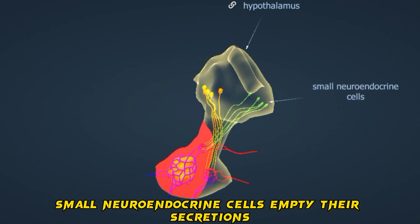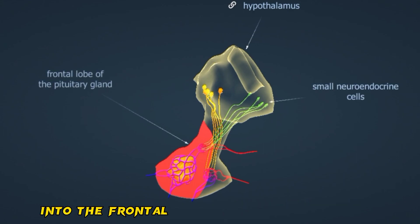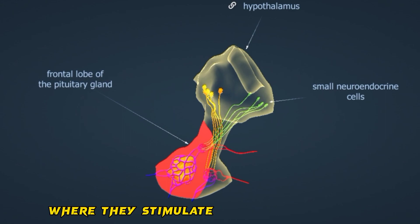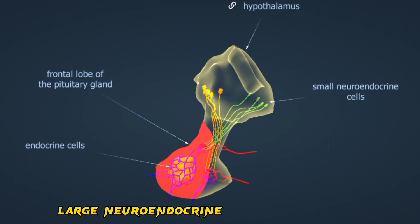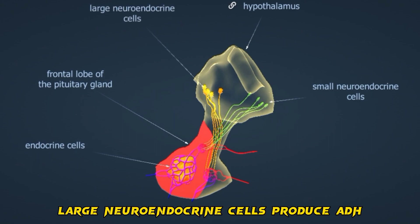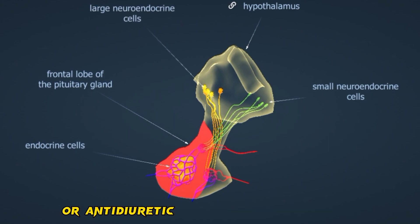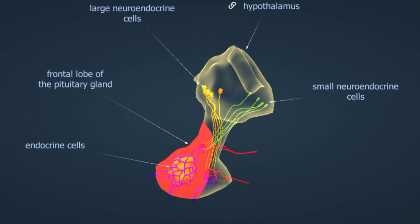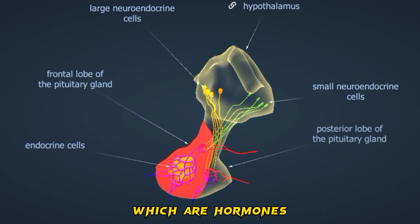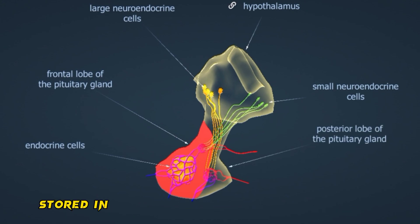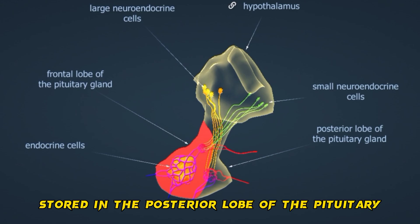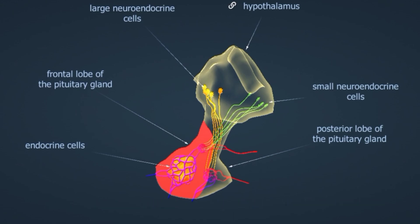Small neuroendocrine cells empty their secretions into the frontal lobe of the pituitary gland, where they stimulate hormone production. Large neuroendocrine cells produce ADH (antidiuretic hormone) and oxytocin, which are hormones stored in the posterior lobe of the pituitary gland.